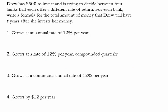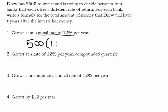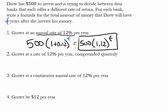Drew has $500 to invest and is choosing between four banks. For each, we write a formula for the total amount two years after investing. Bank 1 grows at an annual rate of 12% per year — they give you 12% at the end of each year. We model that as 500(1 + 0.12)^t, or simply 500(1.12)^t.